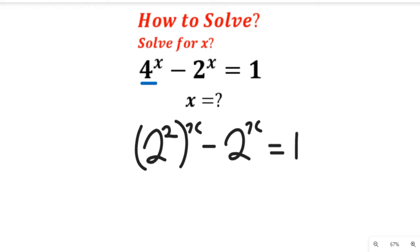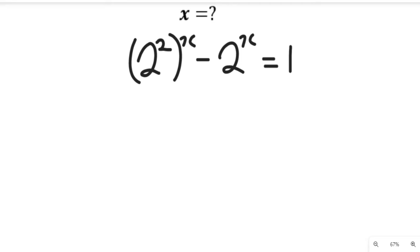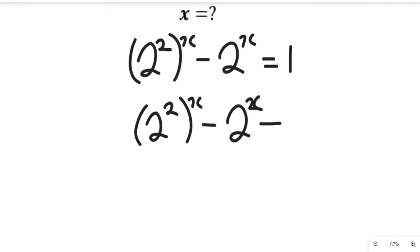So all we need to do is to bring the 1 over to the other side. So we'll have 2 to the power of 2, all to the bracket x, minus 2 to the power of x, minus 1, equal to 0.